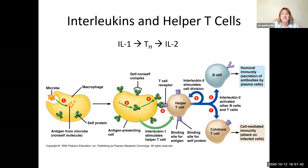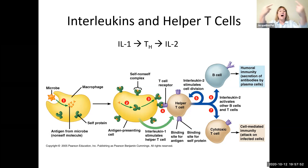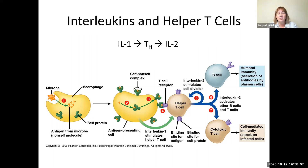Once that helper T cell has been activated, it's going to be producing interleukin-2. Interleukin-2 has multiple effects. The first effect is autocrine — right back onto that helper T cell that made it — causing the helper T cell to undergo mitosis. So we now have a clone of helper T cells against that specific antigen that originally started the process.